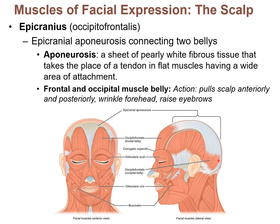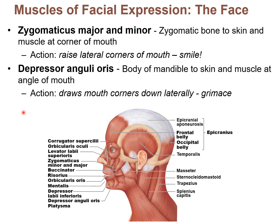The action of this muscle — seen in italics — is that it moves the scalp. It can pull it forward or back, and that allows you to do things like wrinkle your forehead or raise your eyebrows.